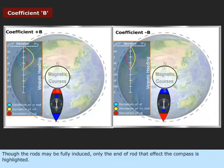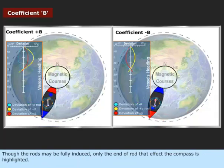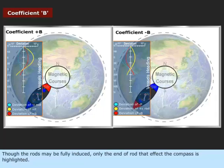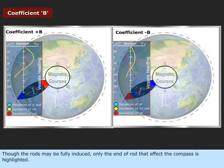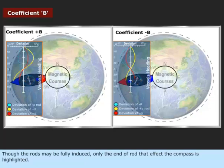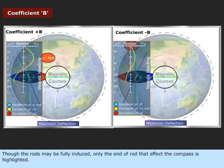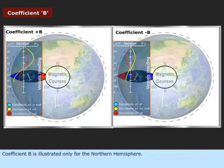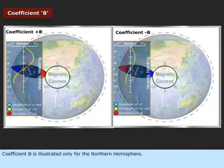Though the rods may be fully induced, only the end of the rod that affects the compass is highlighted. Coefficient B is illustrated only for the northern hemisphere.